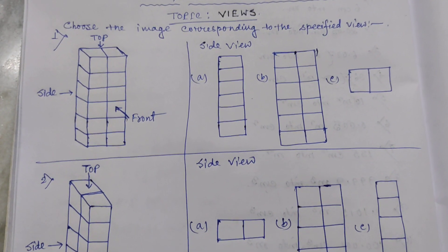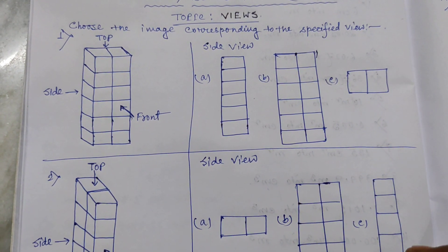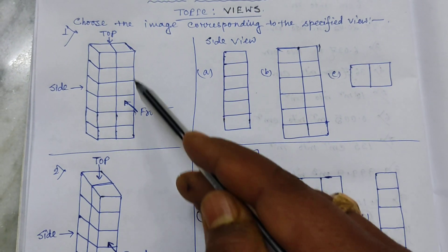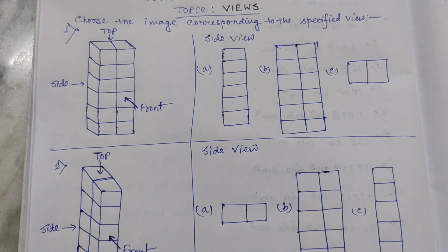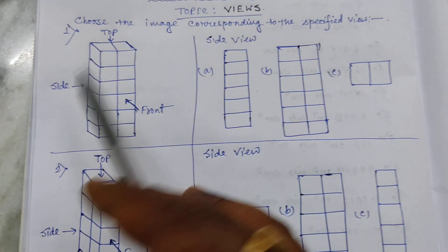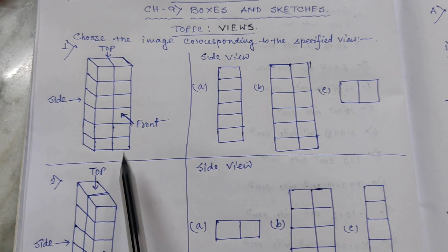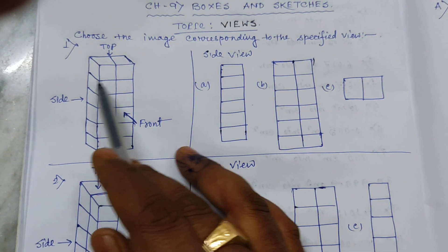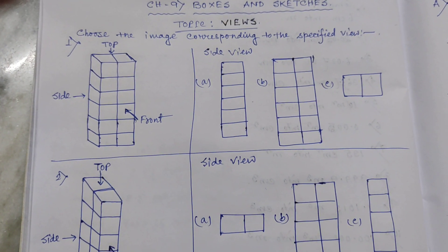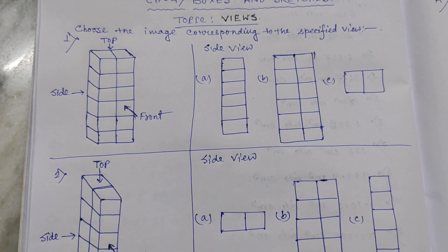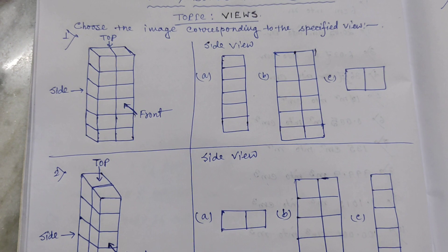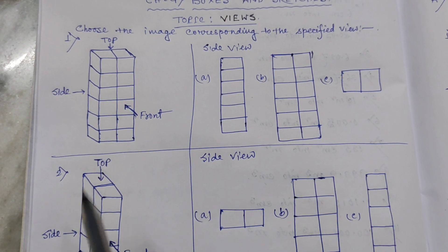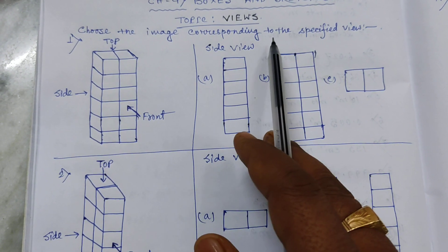In each of these cases, you have to choose the correct view. Each object is three-dimensional — it has a length, a breadth, and a height. We have to think about different views and select the correct option. The heading is: 'Choose the image corresponding to the specified view.'